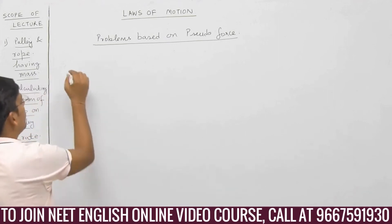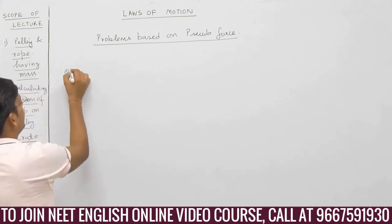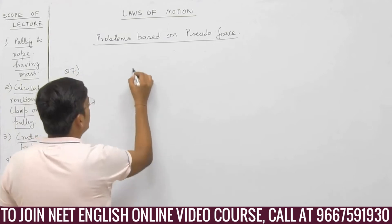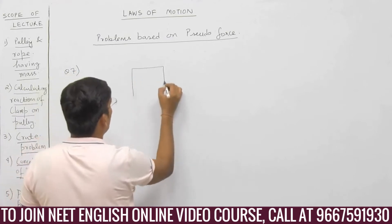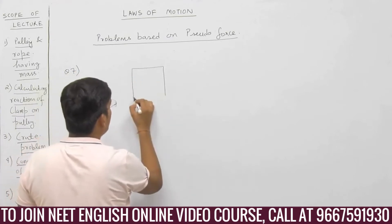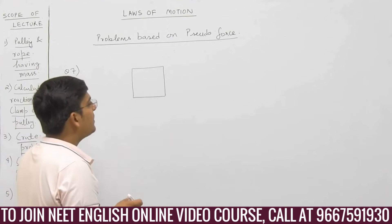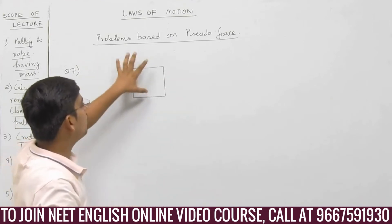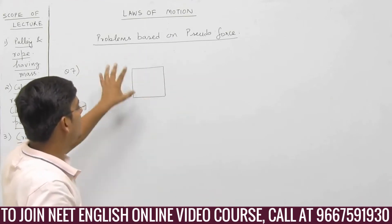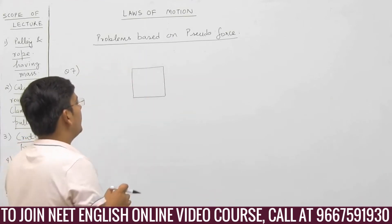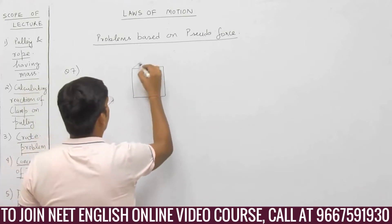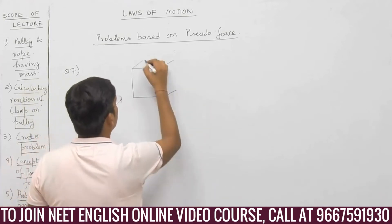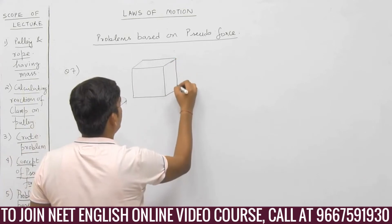Let us discuss another problem, question number 7 based on pseudo force. This is a cubical box — you are just able to see the front view, you are able to see the square. It is a cubical box basically, let me draw a cube only. So now this becomes a cube.